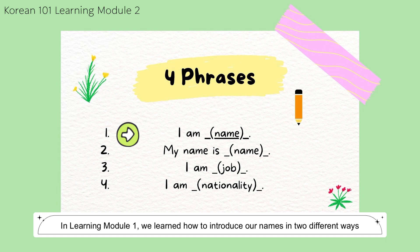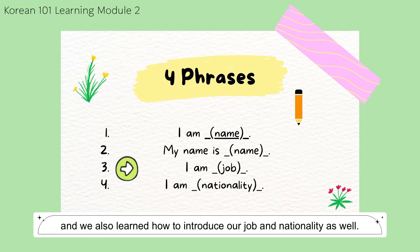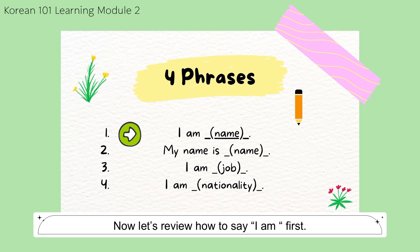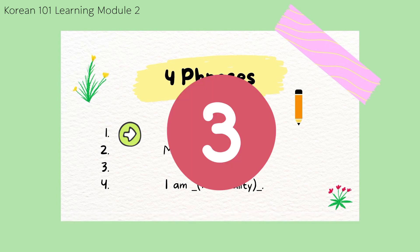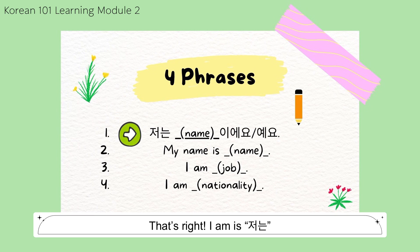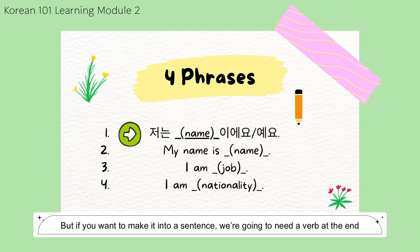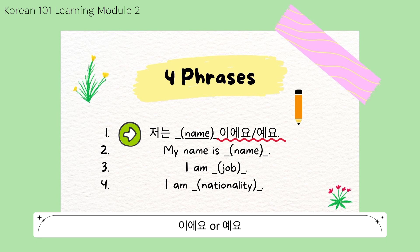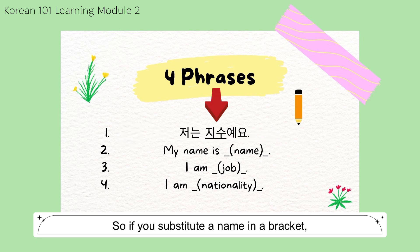In Learning Module 1, we learned how to introduce our names in two different ways, and we also learned how to introduce our job and nationality as well. Now let's review how to say 'I am' first. 3 seconds or pause the video. That's right! 'I am' is 저는. But if you want to make it into a sentence, we're going to need the verb at the end: 이에요 or 예요. So if you substitute a name in the bracket, it goes 저는 지수예요.